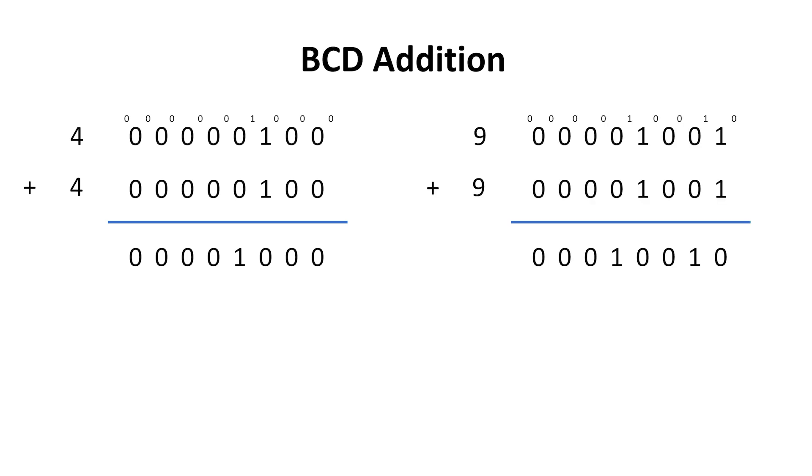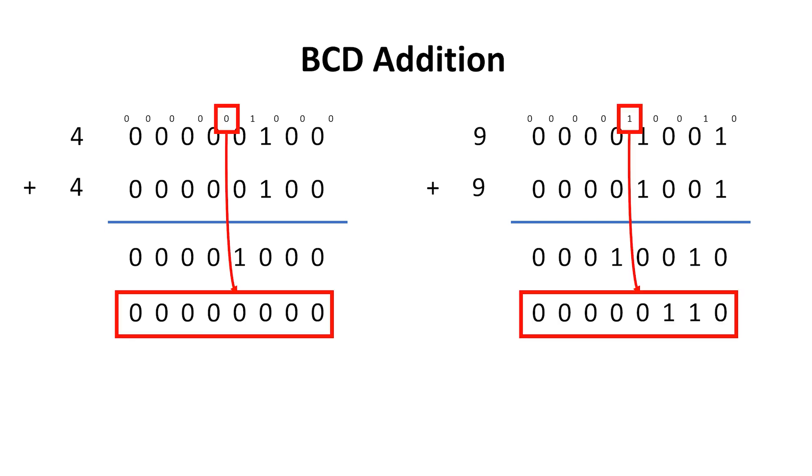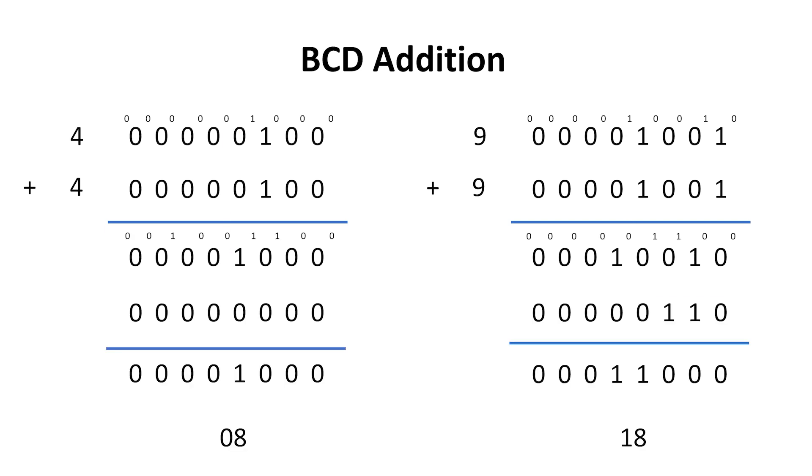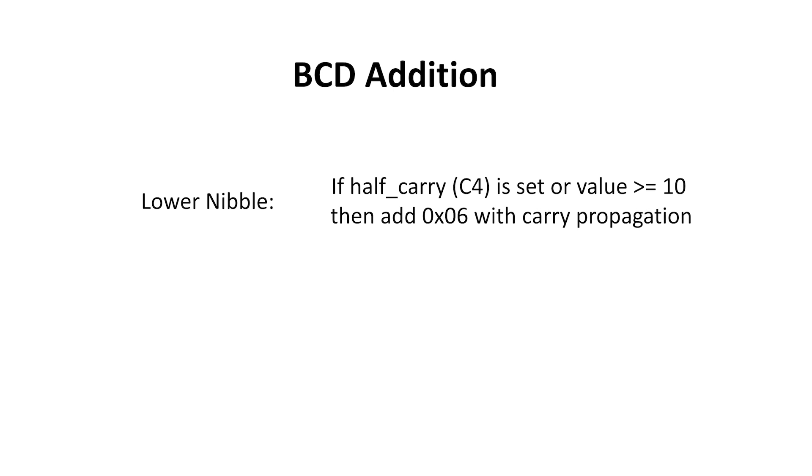But on the right, when we add 9 and 9, we get the output 1, 2 in hexadecimal. In this case, 1, 2 is incorrect. We want to add 6 to make it 1, 8, which is decimal 18, the answer to 9 plus 9. What this means is we still need to use half carry from the ALU addition, as well as this circuit that detects the number greater than or equal to 10. If half carry is set, or if the ALU output is greater than or equal to 10, then we need to add 6 and propagate the carry to the decimal adjust adder for the upper nibble.